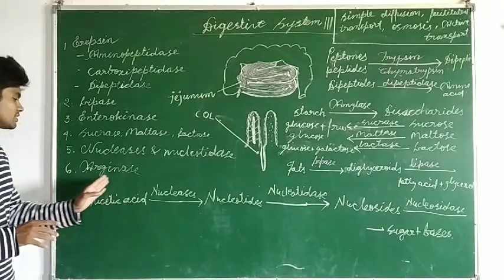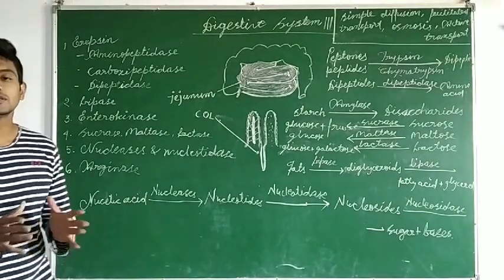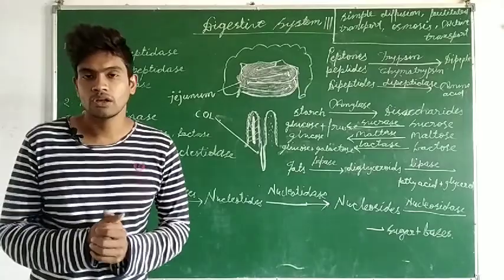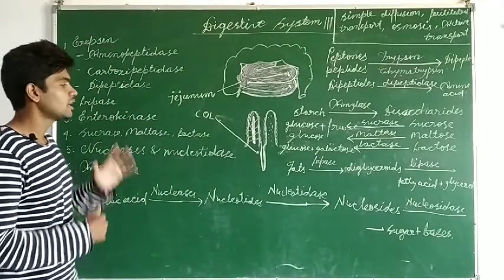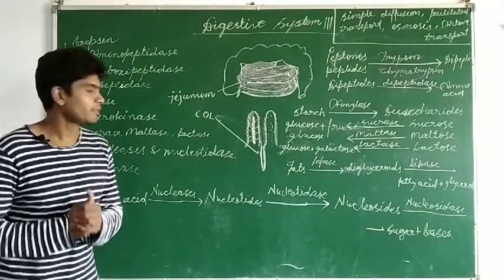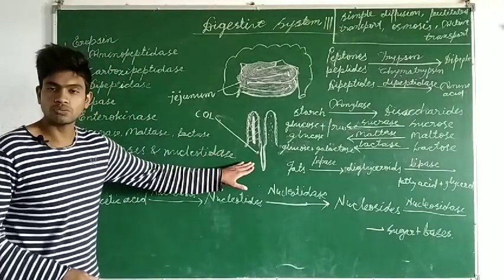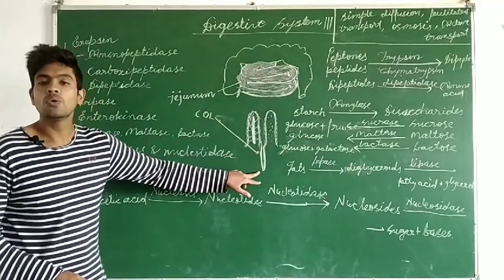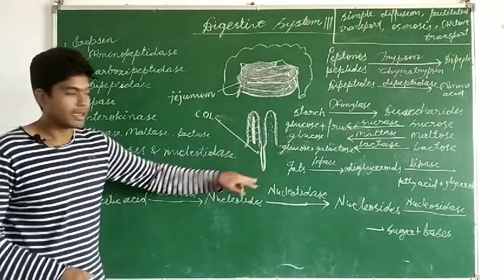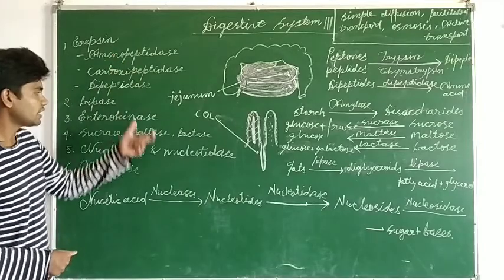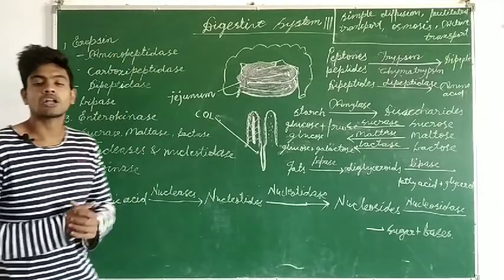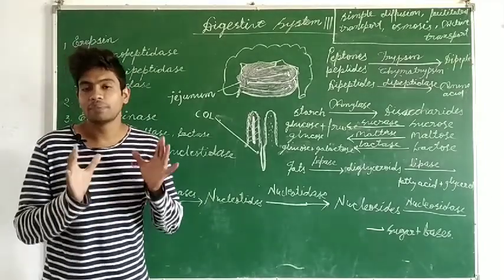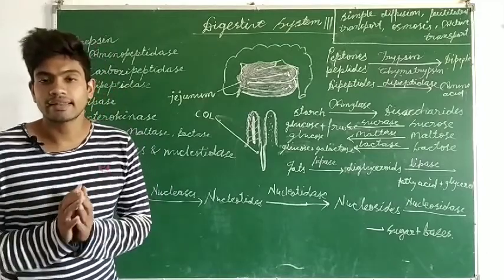The last one is arginase. Arginase converts arginine into urea. All these enzymes are secreted by the crypts of Lieberkühn situated between the bases of the two villi. Together, all these enzymes are called Succus entericus — you have to remember that name.